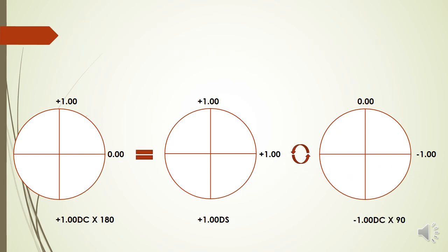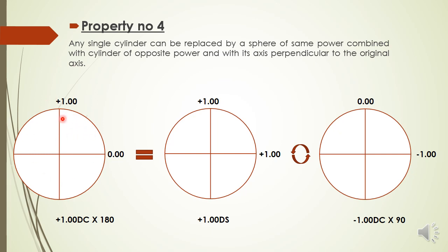The fourth property is about resolution — taking one lens and breaking it into two. Any single cylinder can be replaced by a sphere of the same power combined with a cylinder of the same power but opposite sign, with axis perpendicular to the original. For example, a plus 1 cylinder at 180 can be replaced by a plus 1 diopter spherical combined with a minus 1 diopter cylinder at 90 degrees.